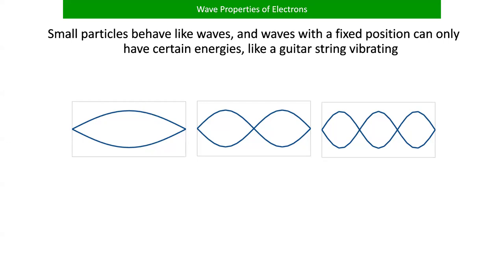So one of the first real quantum mechanics discoveries was by Max Planck — spelled like 'plank' but pronounced 'Plunk.' I was told by my Eastern European grad school instructor that if you ever pronounced it 'plank' he was just going to straight fail you. Max Planck came up with the idea that you could relate the energy of light, the energy of a photon, to a constant times the frequency of that photon — E = hν.